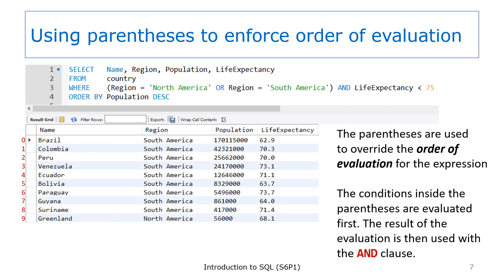Fortunately, it is easy to override the order of evaluation. You simply add parentheses around the clauses that you want evaluated first. In this example, we now have parentheses surrounding the two tests for the region. Because the parentheses enclose an OR condition, the result is TRUE if the region is either North America or South America. Once that condition is evaluated, the result is ANDed with the test for the life expectancy. Both sides of the AND have to be TRUE. By using parentheses, you have promoted the OR condition so that it is evaluated before the AND. The result is that you now have the correct data in the result set: only countries in North or South America where the life expectancy is less than 75.